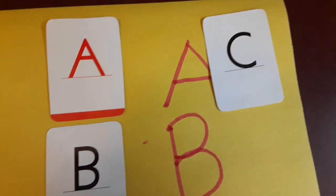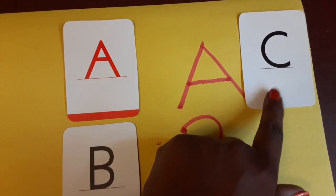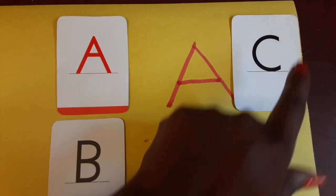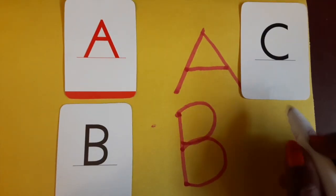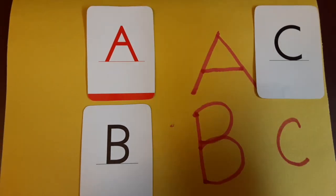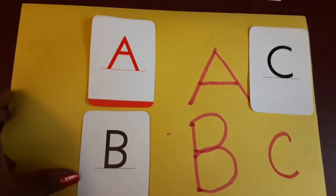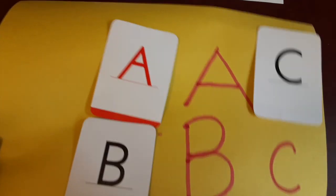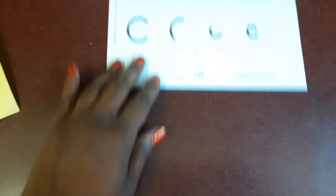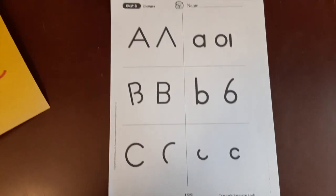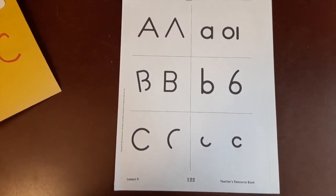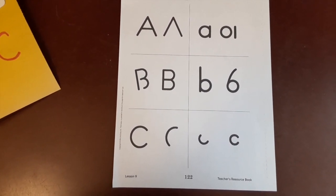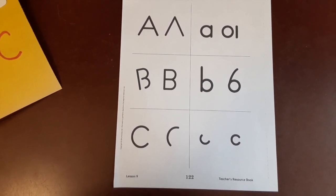Last letter is a C. We talked about a C the last time. What kind of line does a C have? A curve. Alright kiddos, it is time for you to pull out this sheet in your packet and you're going to practice by circling the correct letter.